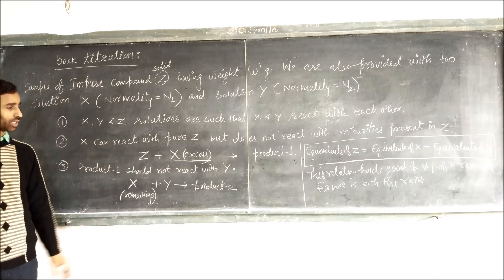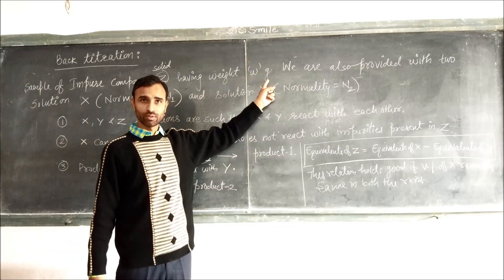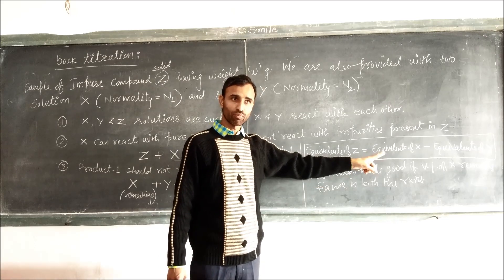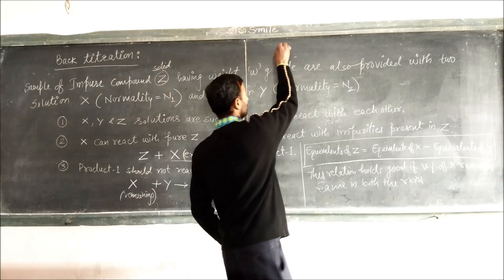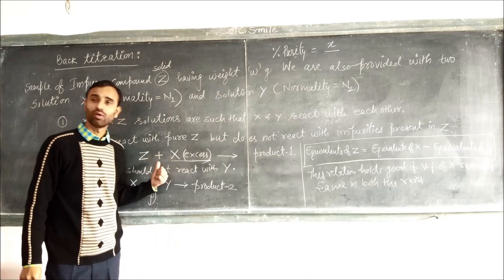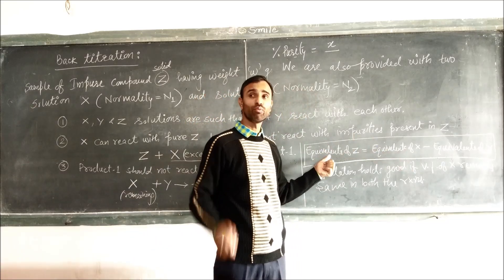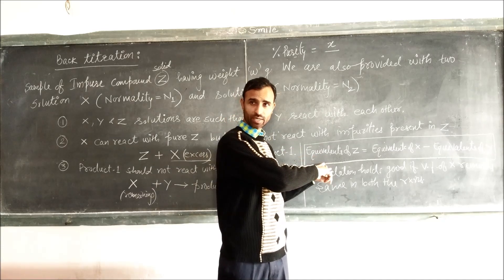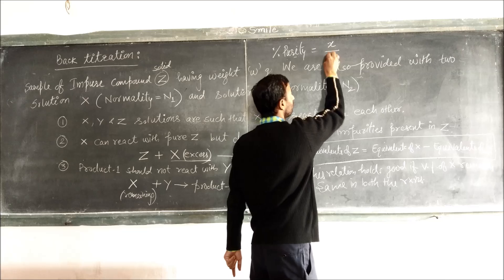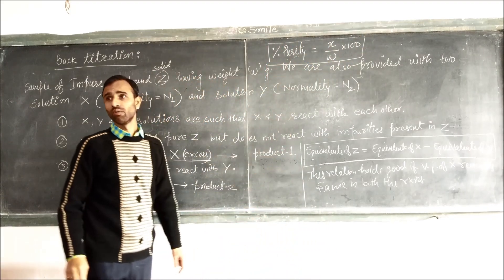By using back titration we can calculate percentage purity of Z. Now this sample weight is W. Let us suppose by using this relation, weight of Z comes out to be X. So what is percentage? That is equal to X, means weight of pure Z. By using this relation we get weight of pure Z, and weight of sample is W, so percentage purity is weight of pure Z divided by total weight into 100. So this is the way to calculate percentage purity.